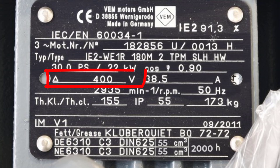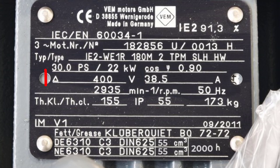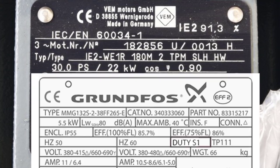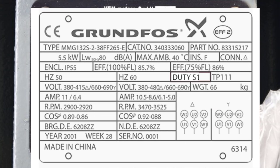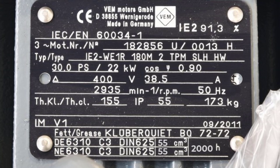The rated line-to-line voltage is 400 volts plus or minus 10%, and the motor must be connected in delta configuration. Be careful with motor voltage and connection relationships — for example, you should only connect the motor at a given voltage input in star connection. Attempting delta connection in the wrong configuration can cause harmful effects on the motor's insulation.